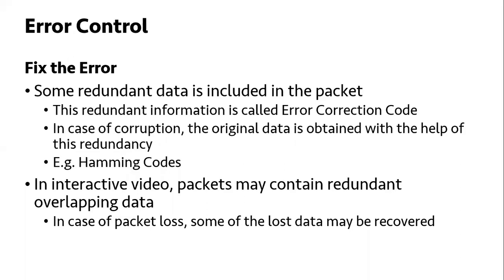The other option is error fixing — the packet has redundant data included. This redundant information is called error correction code. Techniques are available which will extract the original data from this redundant information. For example, the Hamming code. Similarly, if you have interactive video traffic, this method is also used. If you have multiple packets, there will be some overlap between them, so if a packet is lost, because of redundancy, the previous packet's information is available and can be used to reconstruct the data.